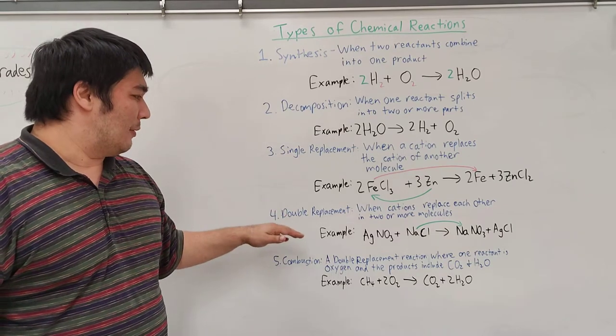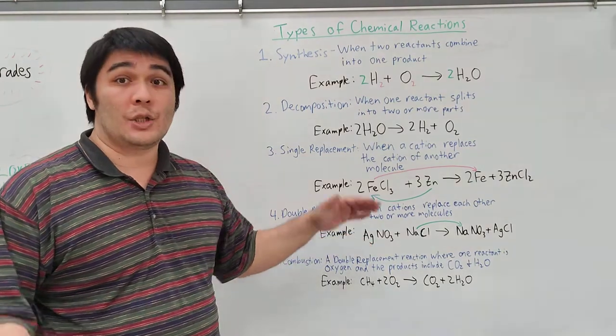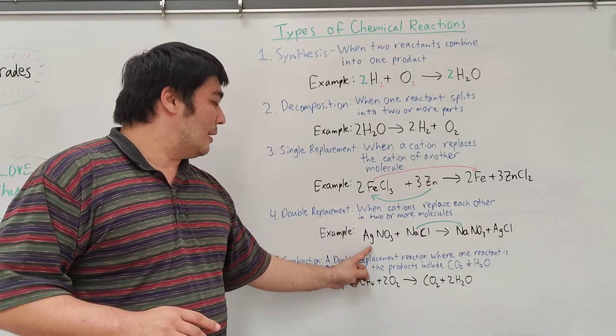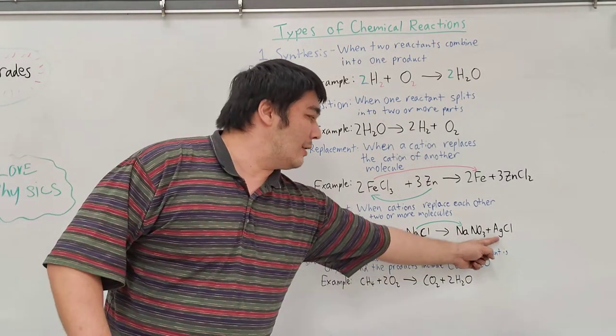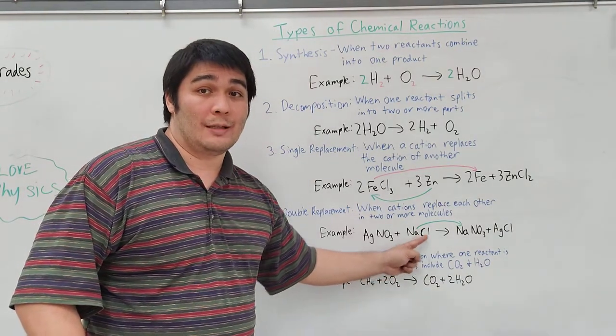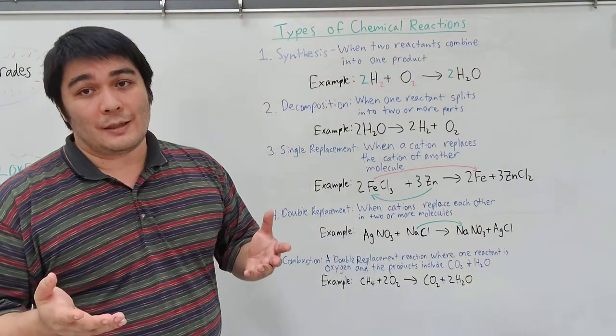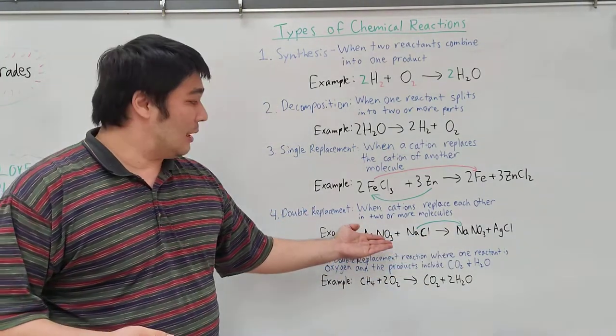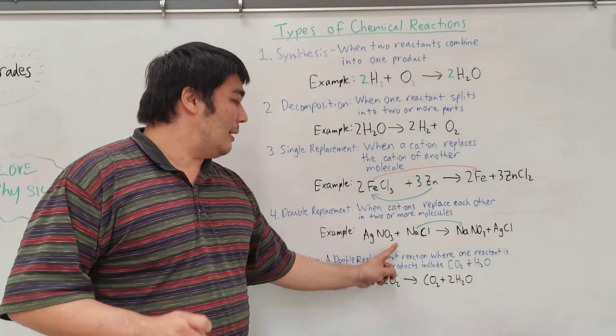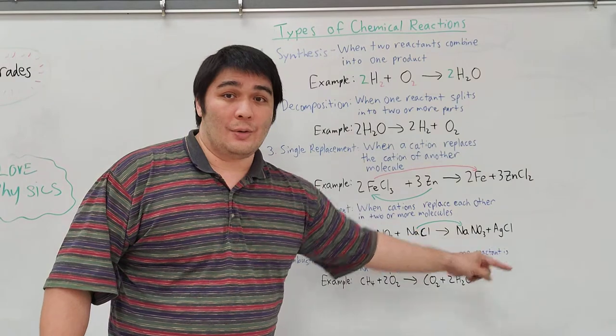In a double replacement reaction, what happens is the cations are basically switching anions. So you've got the silver nitrate over here, silver moving to the outside, and then the sodium moving from the second product reacted to the first product. So it's moving over this way. Now, typically, especially in the reading where I got this example from, you actually won't see this. What you will see is that they'll say AgNO3 plus NaCl leads to AgCl plus NaNO3.